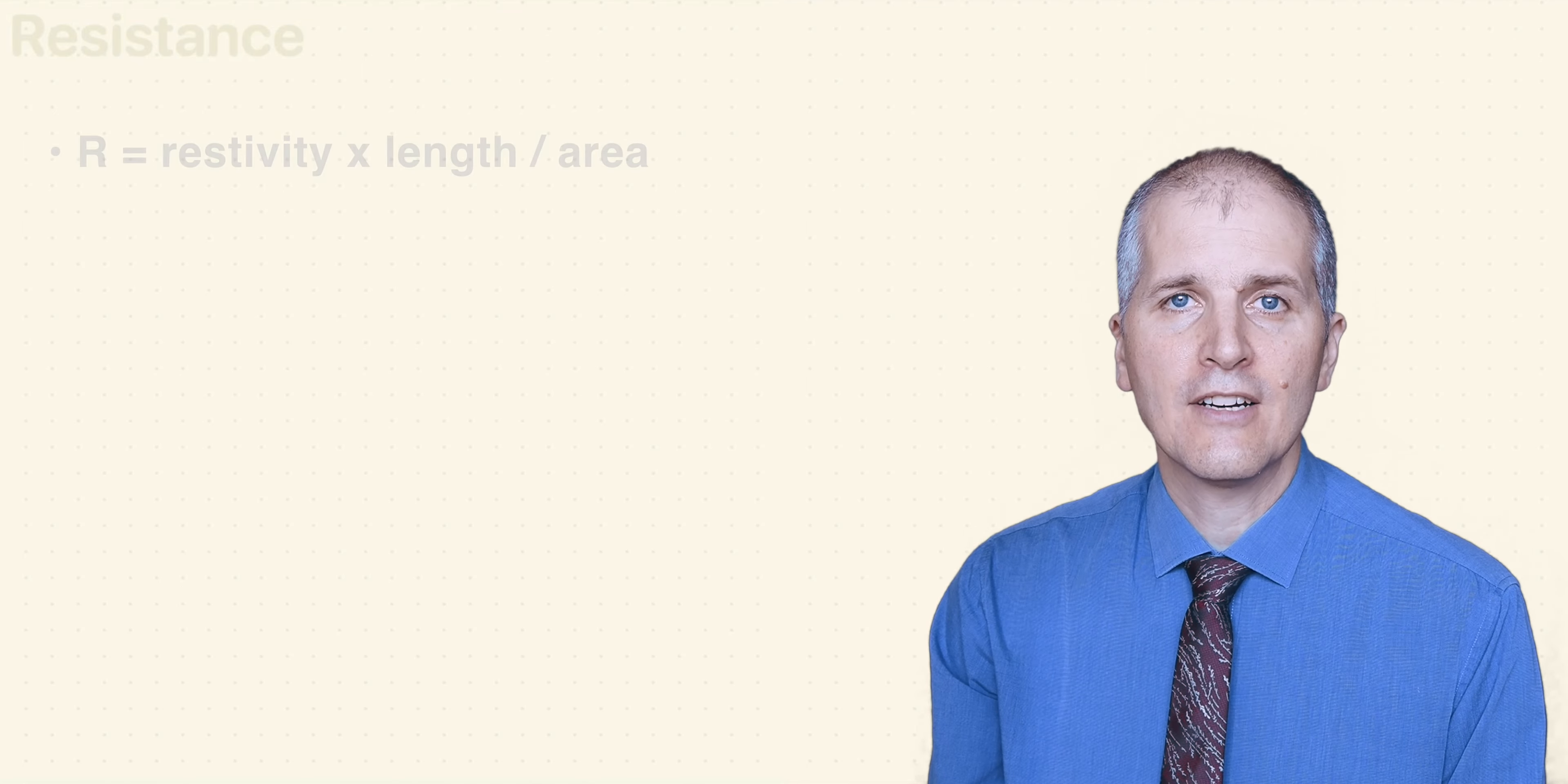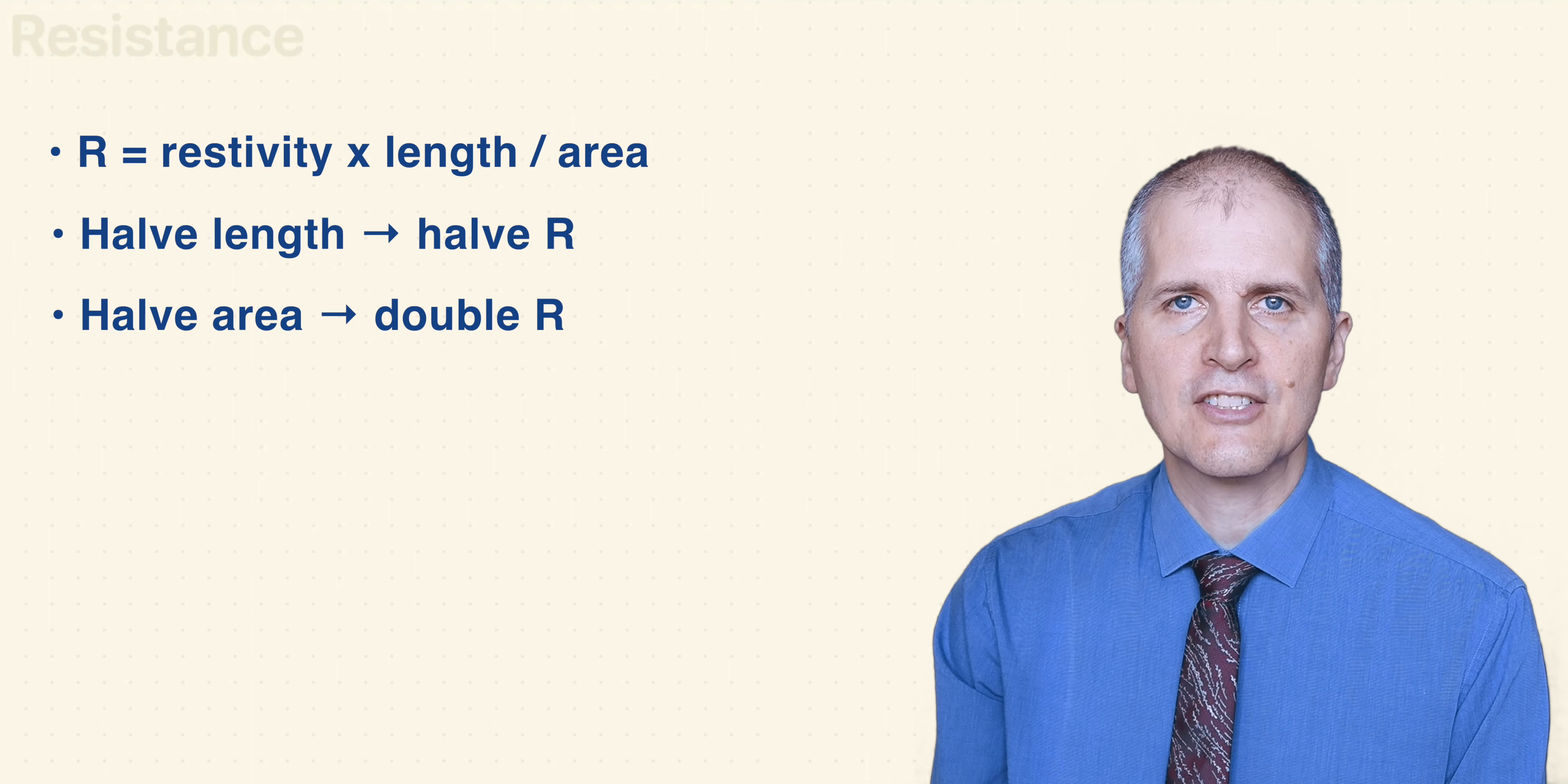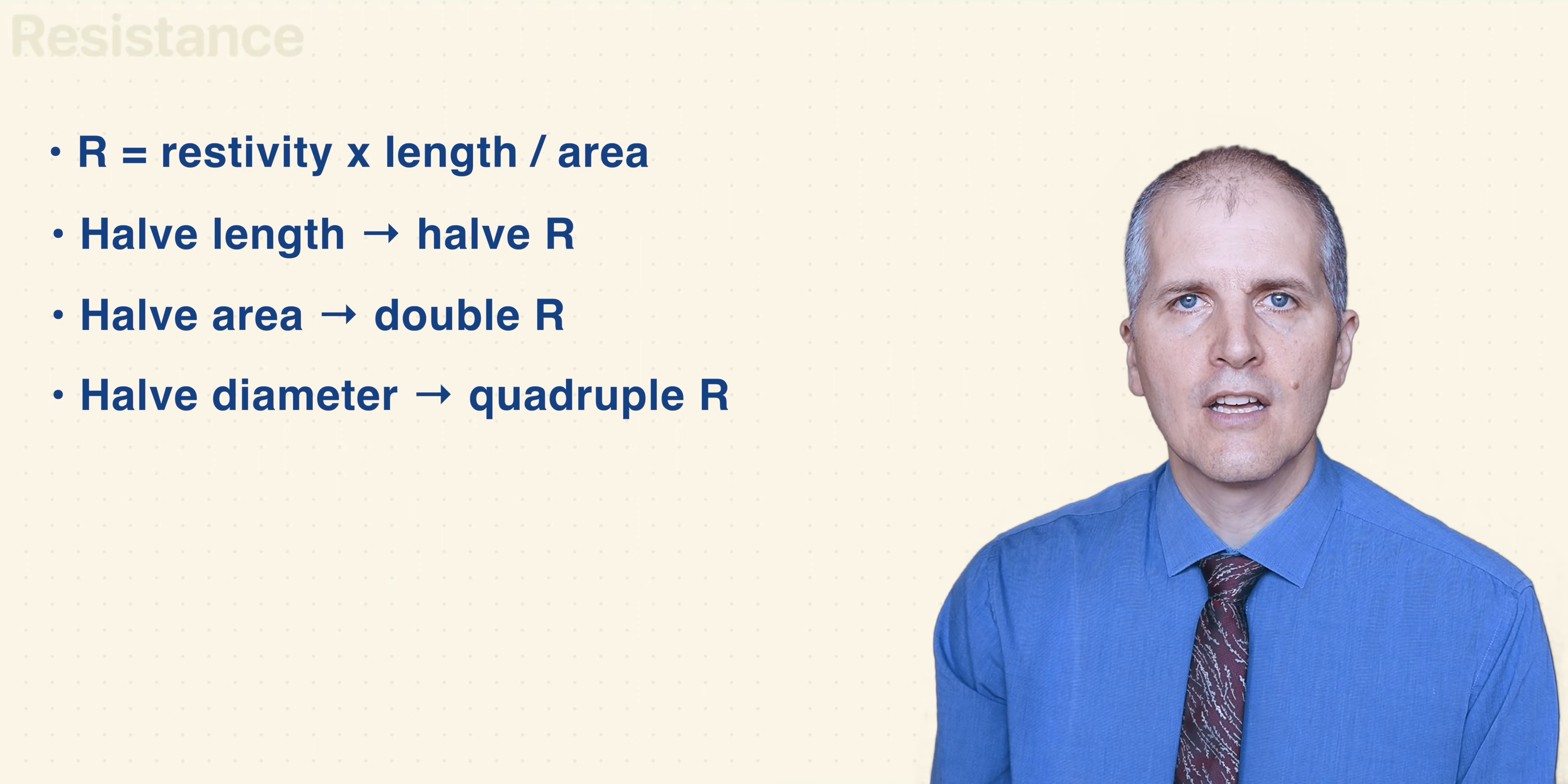And those are the things that control the resistance of a resistor. R is equal to the resistivity times length over cross sectional area. You probably don't need to worry about resistivity, but you do need to know that if you halve the length, you're going to halve the resistance. And if you halve the cross sectional area, you're going to double the resistance. Be careful though, because we are talking about cross sectional area. So if you halve the diameter, that means you're going to quadruple the resistance because the area of a circle is equal to pi r squared.